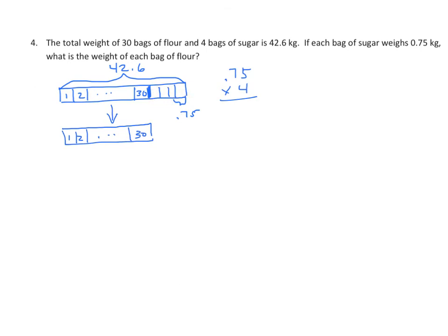That's what's represented in the tape diagram for the sugar portion. We complete the multiplication: 4 times 5 is 20, regroup the 2; 4 times 7 is 28, plus 2 is 30. Put in our decimal and we have 3 kilograms. Now I need to take this sugar part out, and what's left over is just the flour. So I subtract: 42 and 6 tenths minus 3. Line up the decimals — I don't need two decimal places, just one. Subtract and get 6 tenths; regroup the 4 making it a 3, giving 12; put in the decimal; 12 minus 3 is 9; and 3 minus nothing is 3. So the flour portion has a value of 39 and 6 tenths.